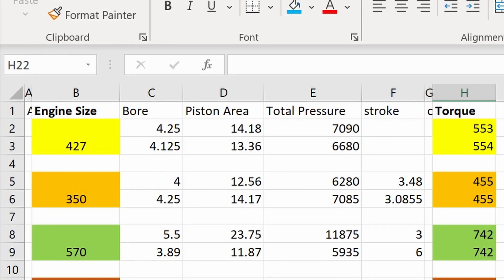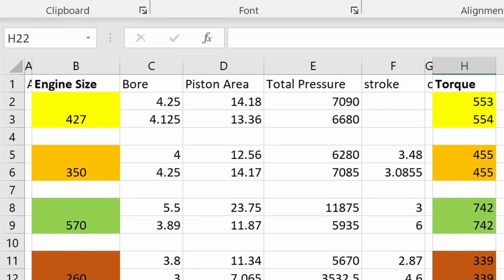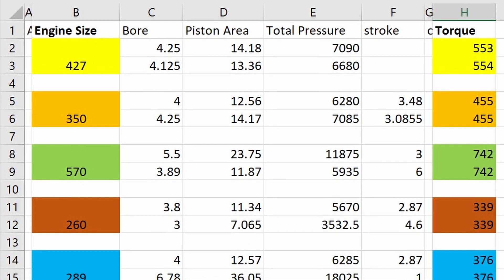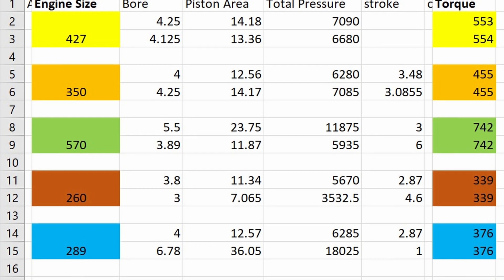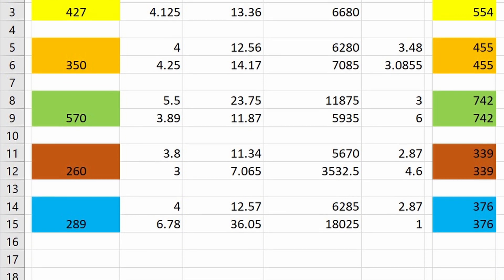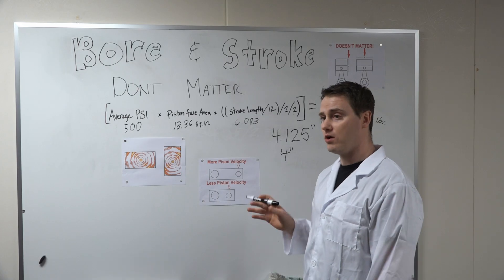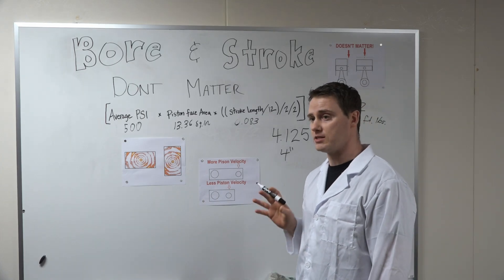And it does not matter what combination you use this formula on, no matter what, use it on a 350, 327, 260, 289, doesn't matter. It will always end up being the same amount of foot pounds of torque as long as the displacement remains the same.